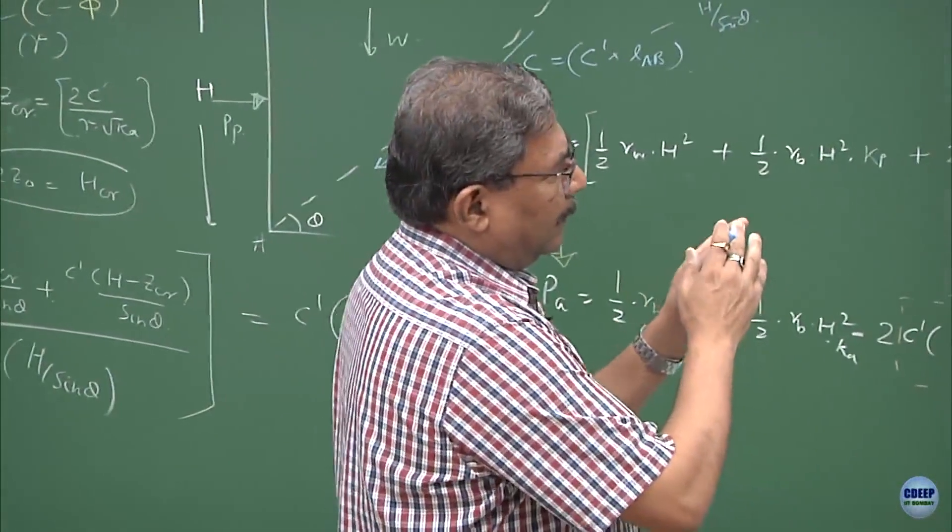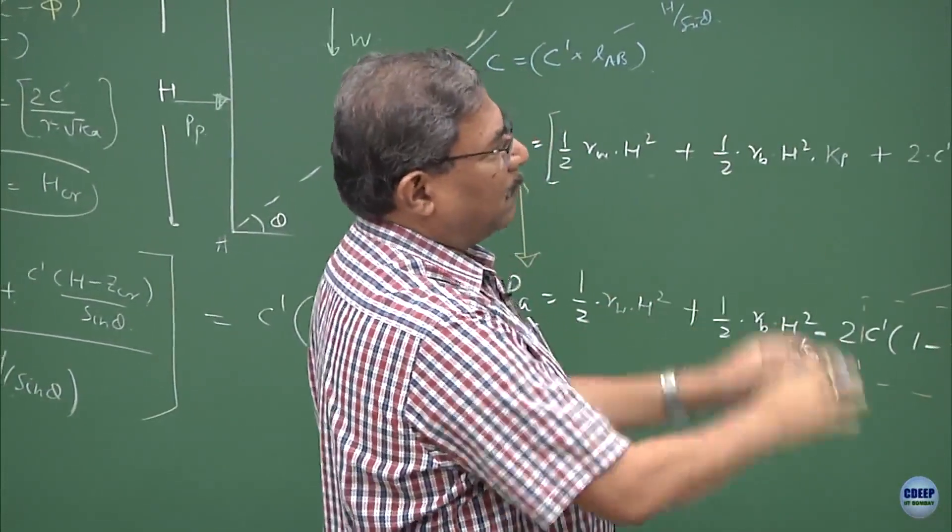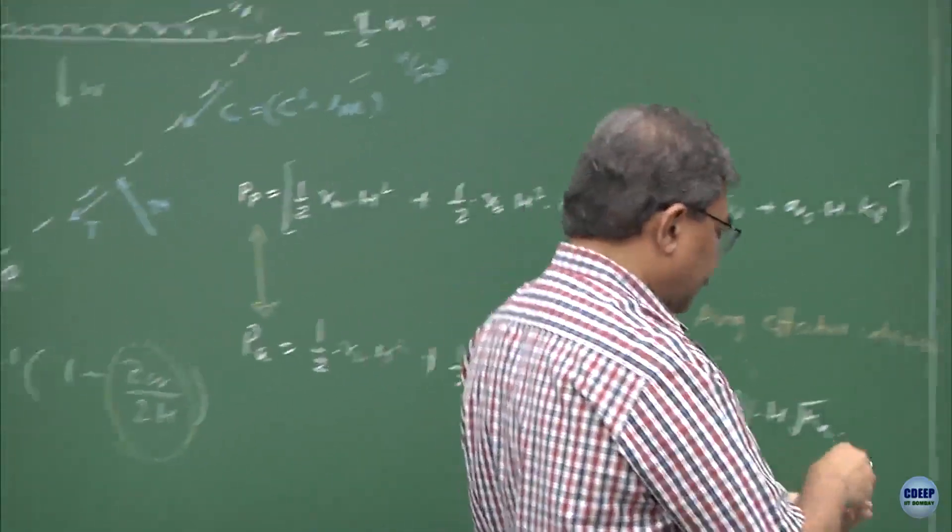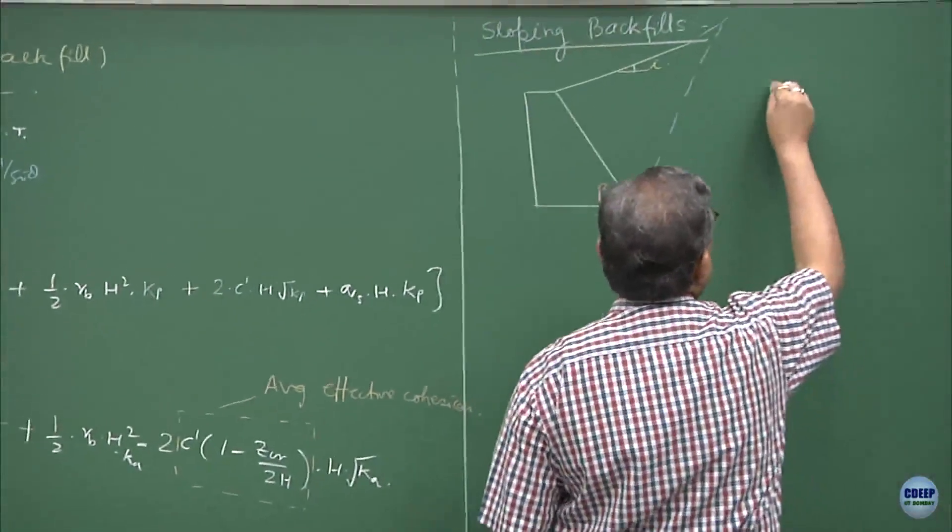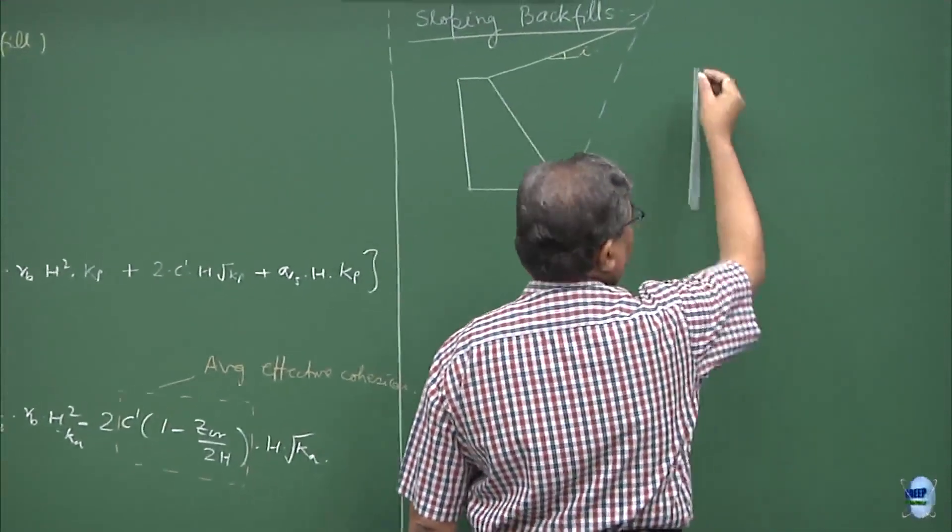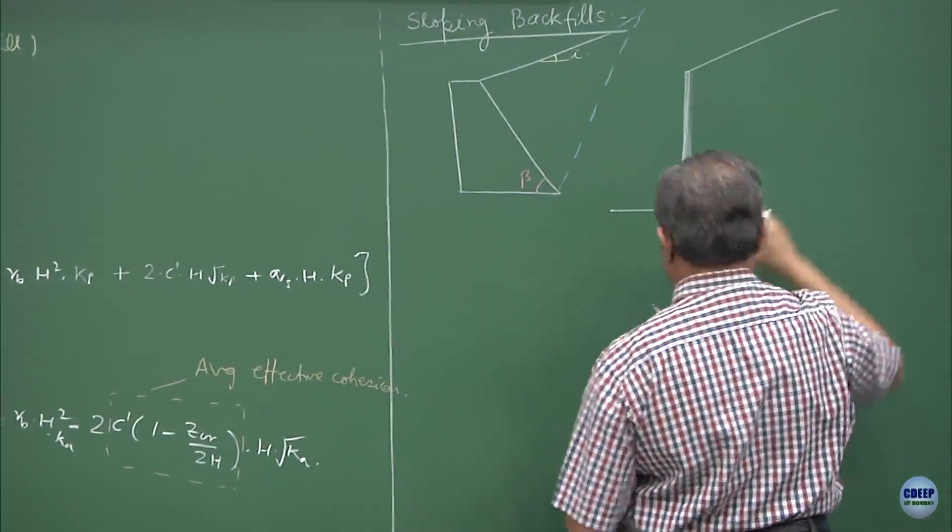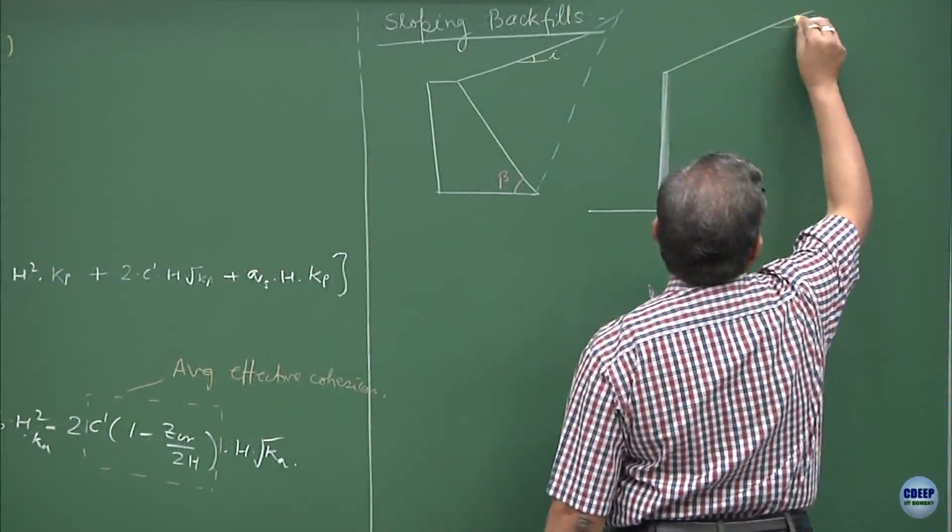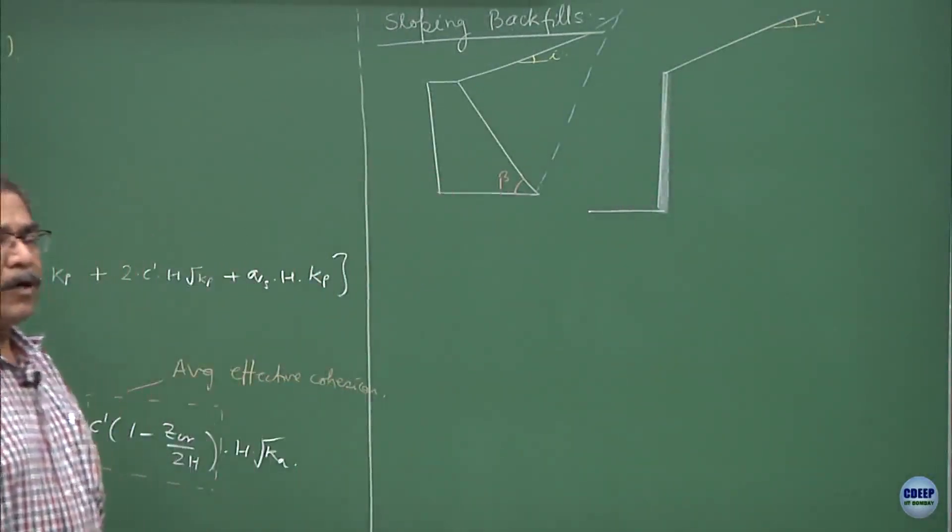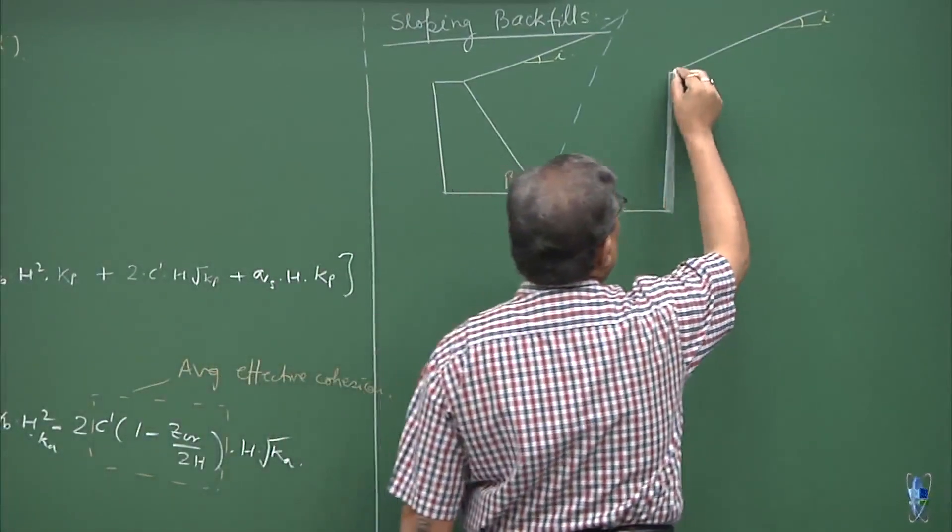Let us make this problem easy by assuming that still this is a Rankine wall which is vertical, the backfill happens to be inclined. This is the initial case when the backfill was horizontal.